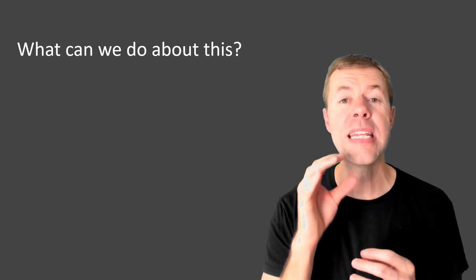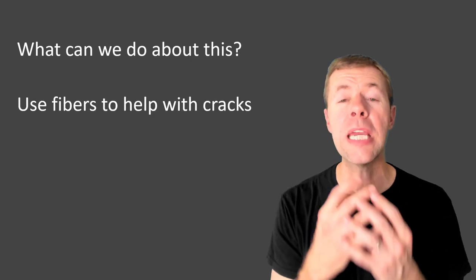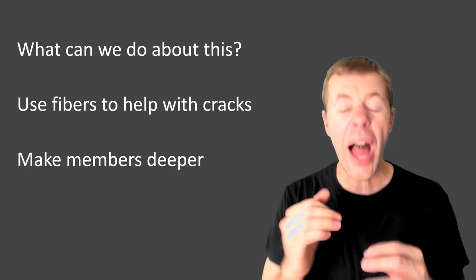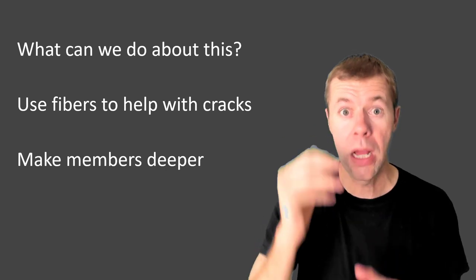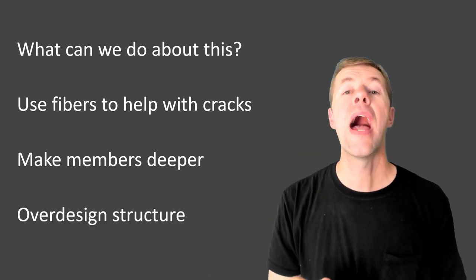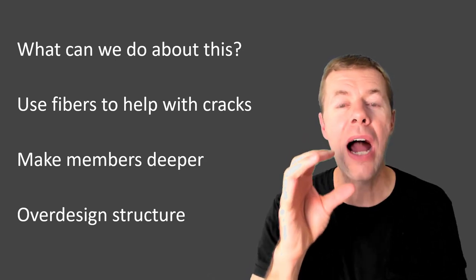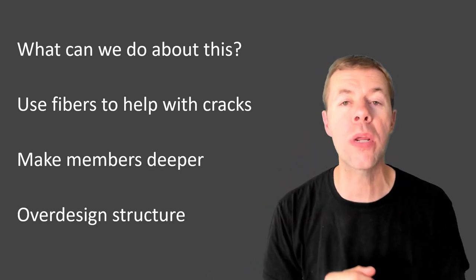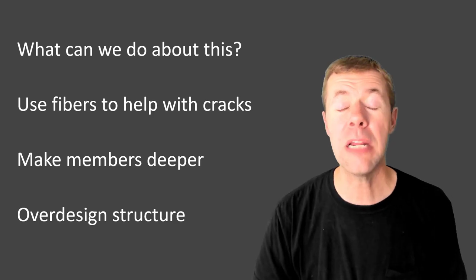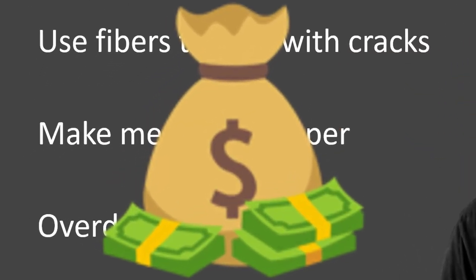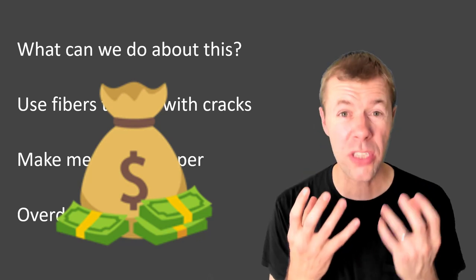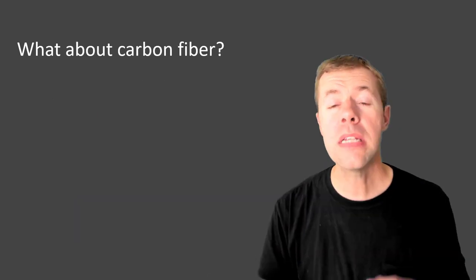Let's just say I wanted to use FRP rebar inside my structure to prevent corrosion. What else could I do to deal with these issues? I could use fibers to help keep the cracks that form small. I could make my members deeper and that would lower my stresses and I could use higher safety factors and over design my structure. Put in way more reinforcement than I actually need. You know what the big problem of all this is? Money. This is gonna make your cost of your structure go way up.